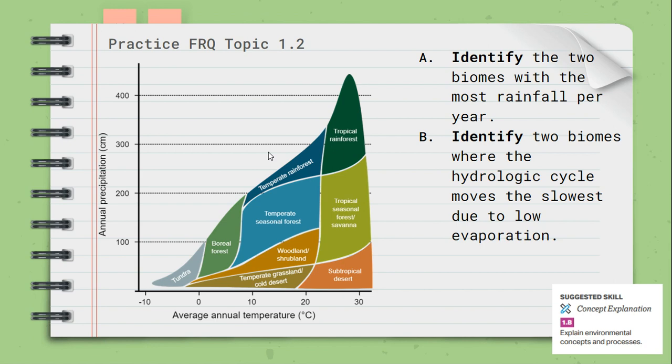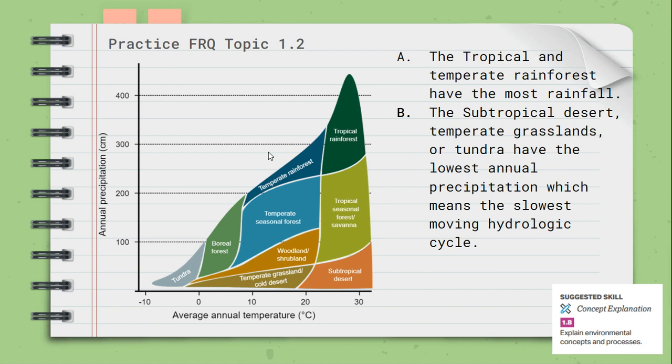Now here comes our practice FRQ on 1.2. Using the graph to the left, answer these two questions in your FRQ journal and in the Edpuzzle: identify two biomes with the most rainfall per year; and identify two biomes where the hydrologic or water cycle moves the slowest due to low evaporation. The accepted answers are: the tropical and temperate rainforest have the most rainfall. For the slowest hydrologic cycle, you could have said subtropical desert, temperate grasslands, or tundra — all have the lowest annual precipitation. That's it for our video on 1.2. If you have any questions, please leave them at the end of the video.